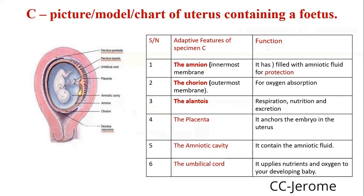Specimen C: I use a picture of a uterus containing a fetus. The uterus is the womb; the fetus is the developing baby. The adaptive features and their functions — amnion, which is the innermost membrane, has amniotic fluid which provides protection. The chorion is the outermost membrane, for oxygen absorption. The placenta anchors the embryo in the uterus. The umbilical cord supplies oxygen to the developing baby.